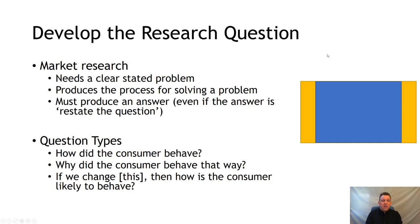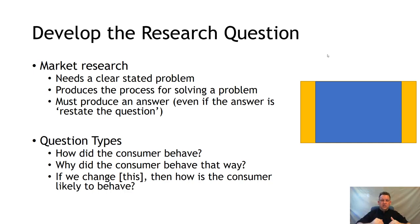Developing the research question: market research has to come out the other end with an answer. One of those answers can genuinely be 'try again — results unclear.' You can start with a macro-level question and then dive deeper. You need a clearly stated problem so you can give yourself an opportunity to have a clearly stated answer. You can't measure something if you've got an unclear statement of what you're trying to measure. Question types include: how did the consumer behave — counting; why did the consumer behave — understanding; and if we change a factor of our marketing activity, how will the customer likely respond?